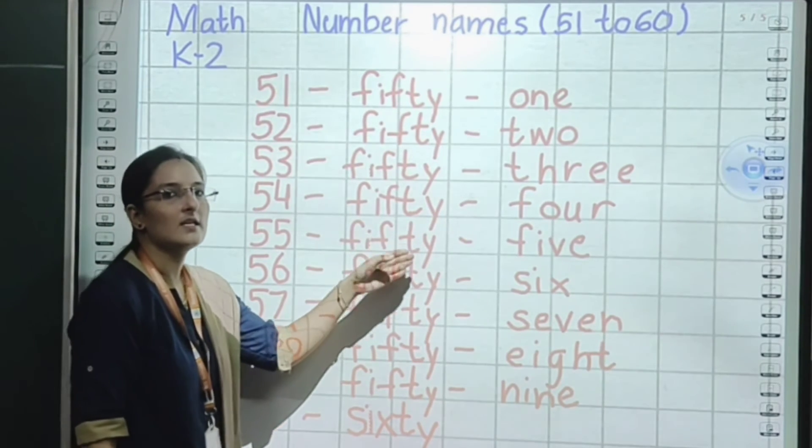Next: 55. F, I, F, T, Y — fifty, small sleeping line, F, I, V, E — five. 55 is fifty-five. Next: 56. F, I, F, T, Y — fifty, small sleeping line, S, I, X — six. 56 is fifty-six.